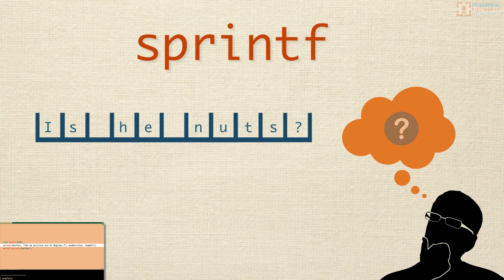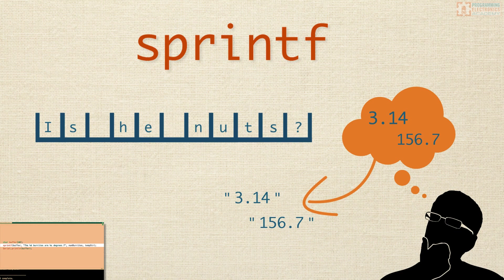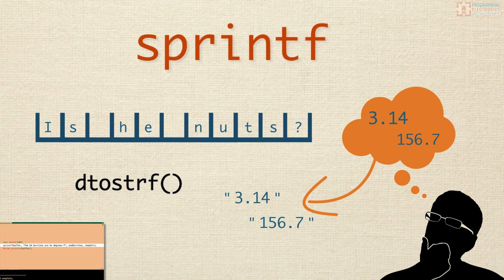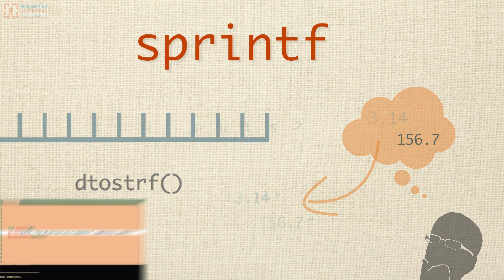Well, here's the deal. sprintf with Arduino cannot handle floating point values. So if you have to print something that has a decimal point, like 3.14 or 156.7, then you need to convert that float value to a character string first. And then you can print the string. A handy way to do that is with dtostrf, which converts a floating point value to a string. We won't get into that now, but be sure to check out our other video on using dtostrf with Arduino.